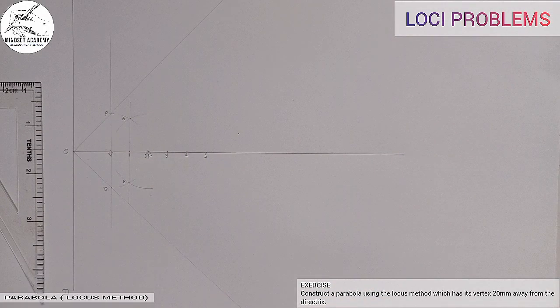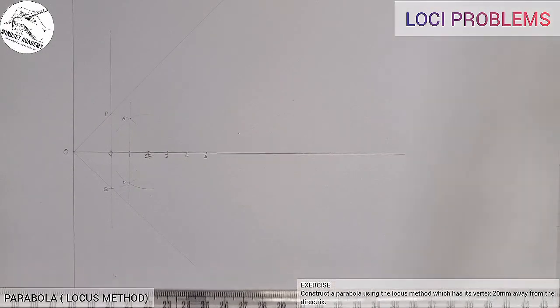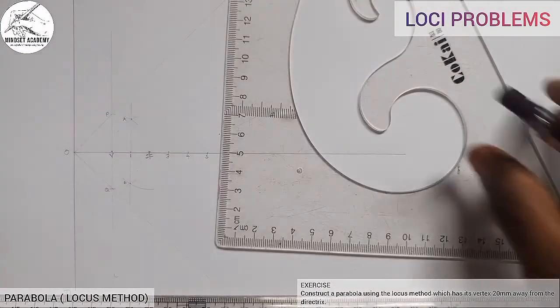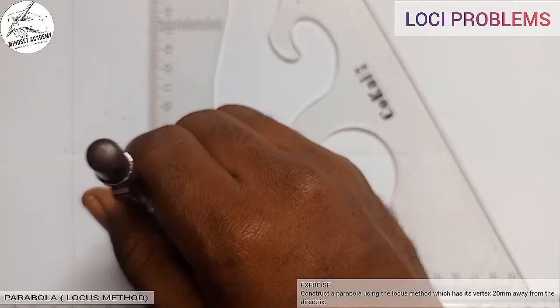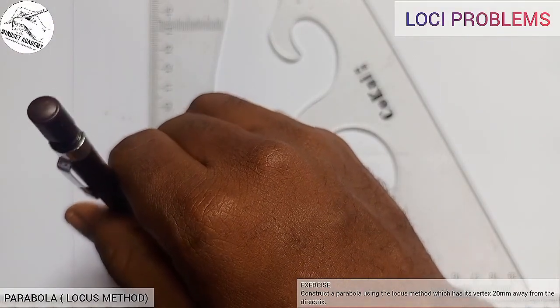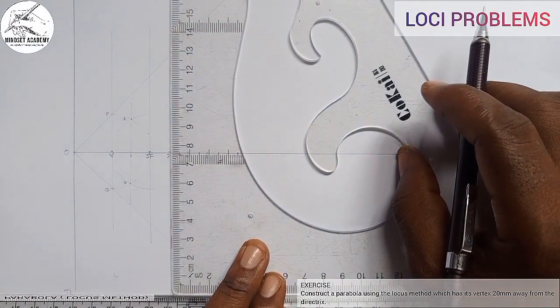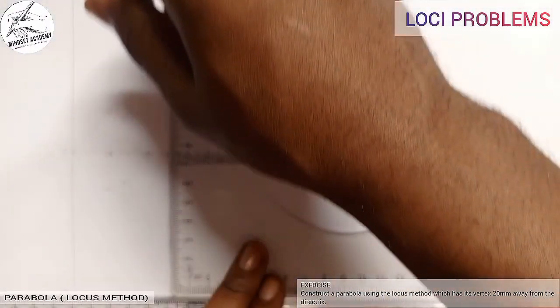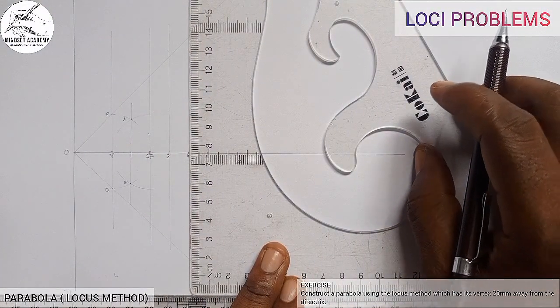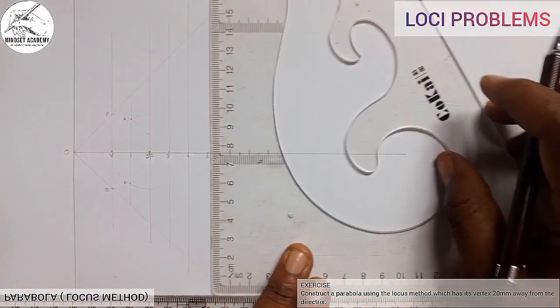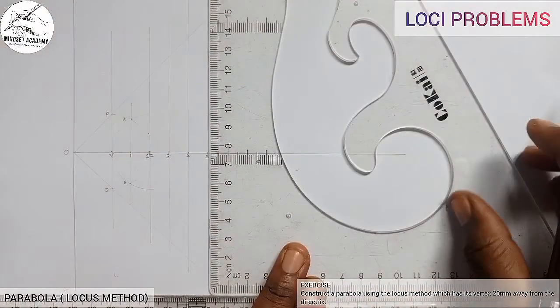Then through those points, I am going to draw a vertical line through those points. So through 2 here, I will draw a line this way. Through 3, I will draw a line this way. Through 4, I will draw another line this way. Through 5, I will draw another line this way. You see that?